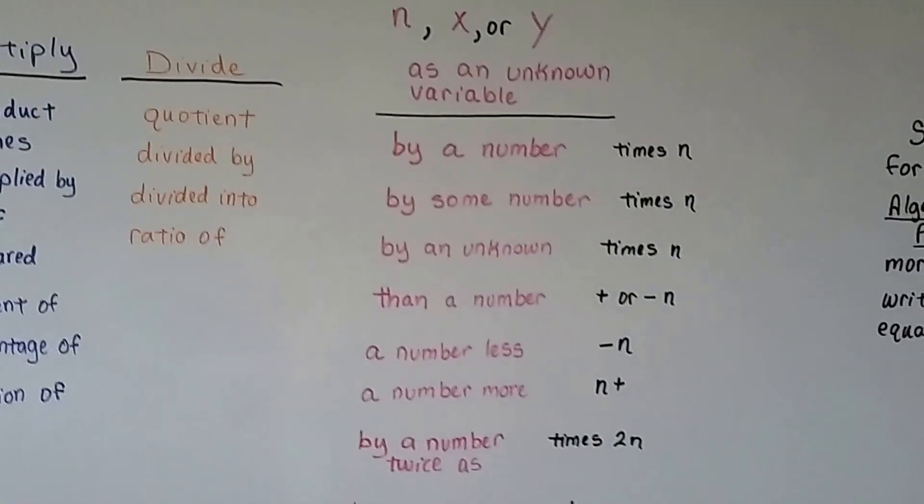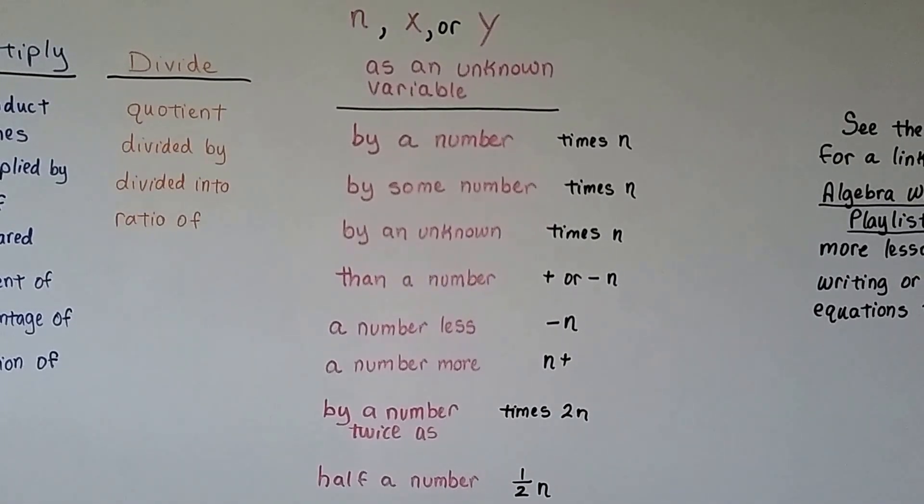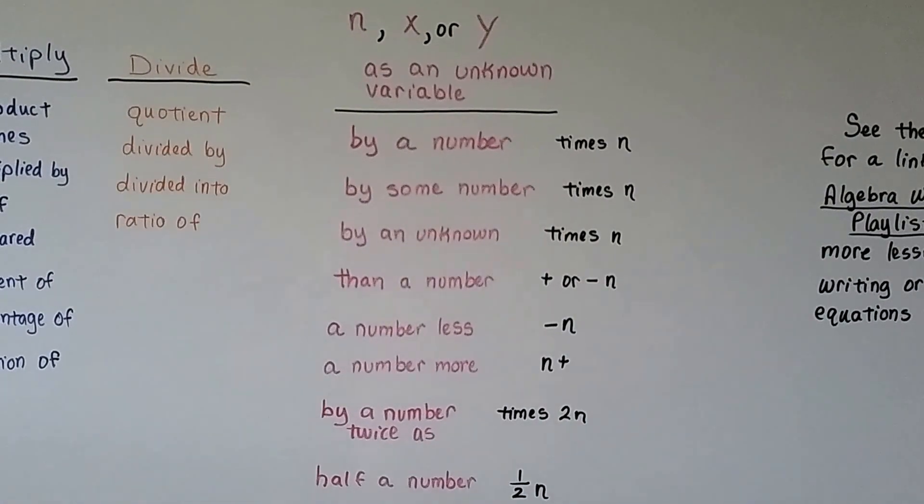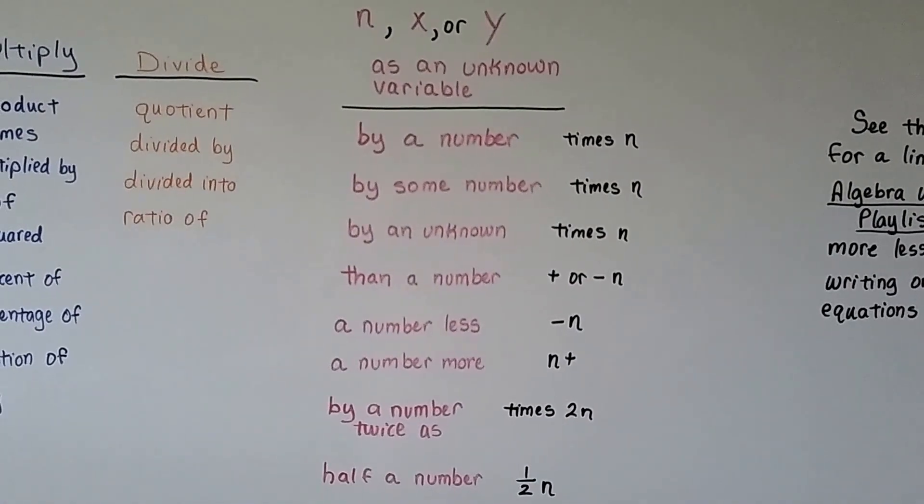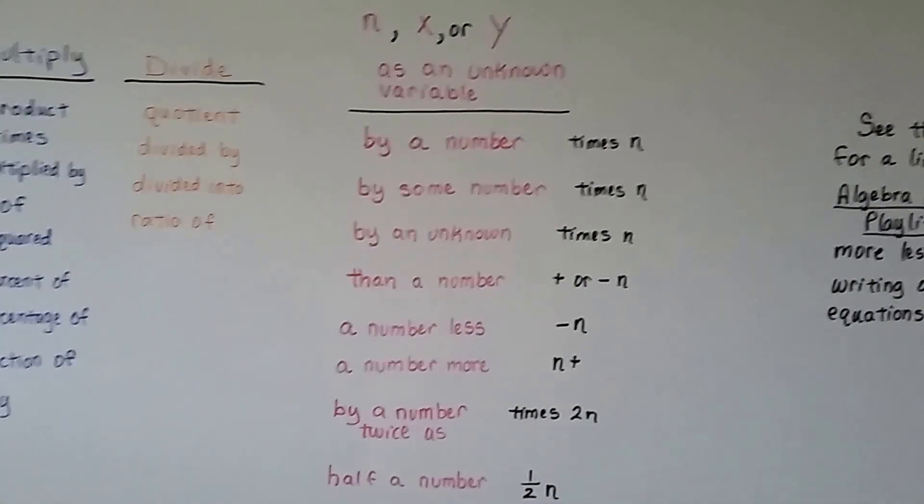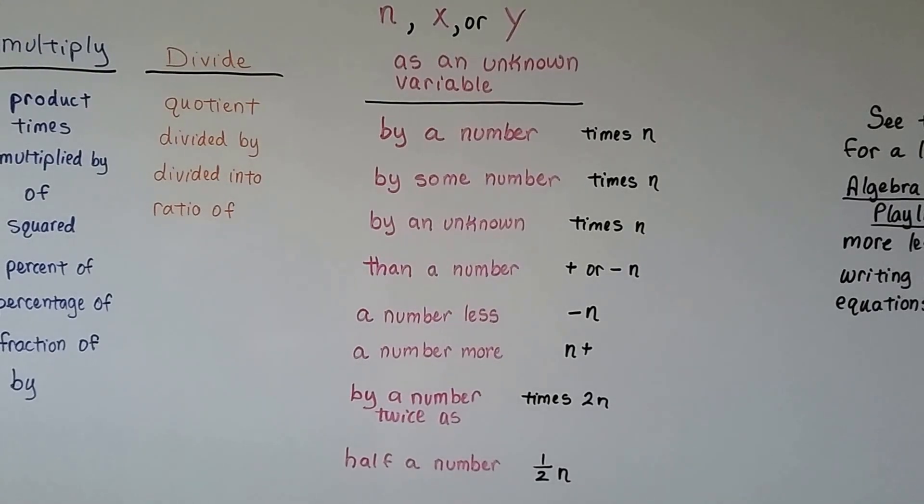And then we're going to come across word problems that actually need a variable. We can use N, X, or Y, or any variable letter to represent what we're trying to solve. If we're solving for dogs, we could use D for dogs. If we're trying to do cars, we could use C for cars.